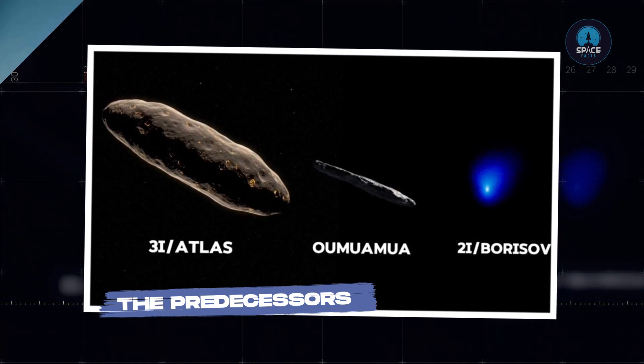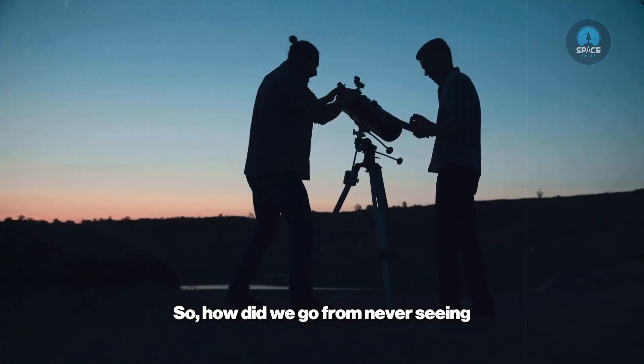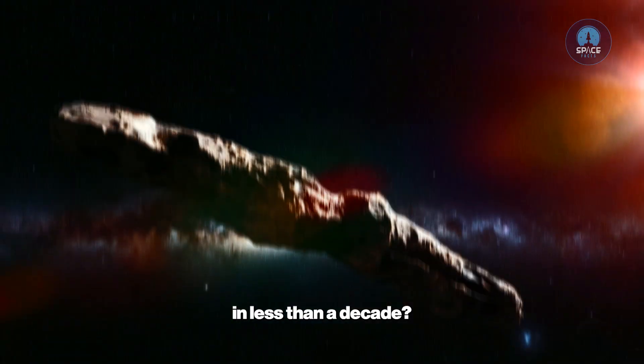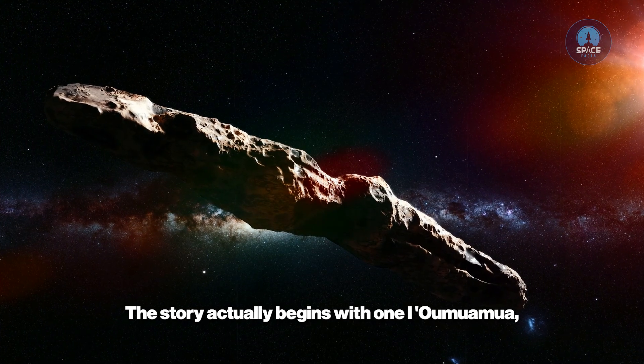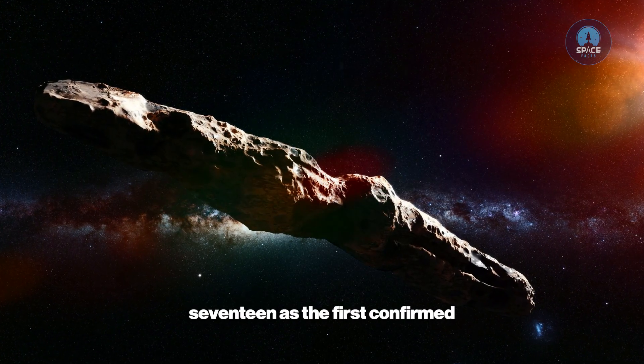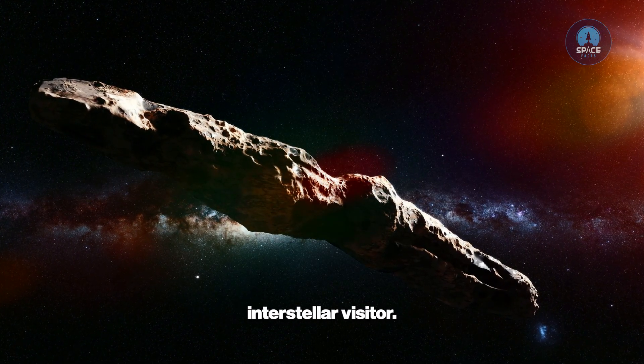How did we go from never seeing interstellar objects to discovering three in less than a decade? The story actually begins with one: 'Oumuamua, which made history in October 2017 as the first confirmed interstellar visitor.